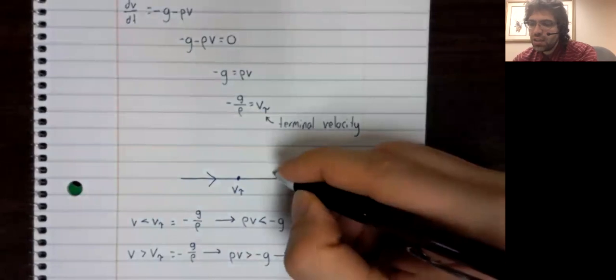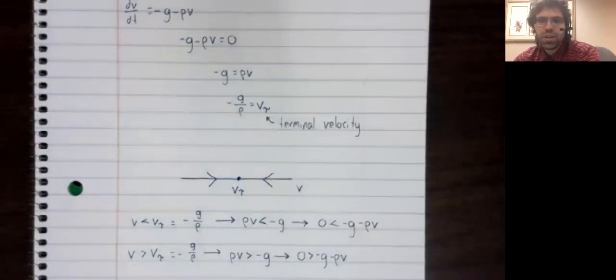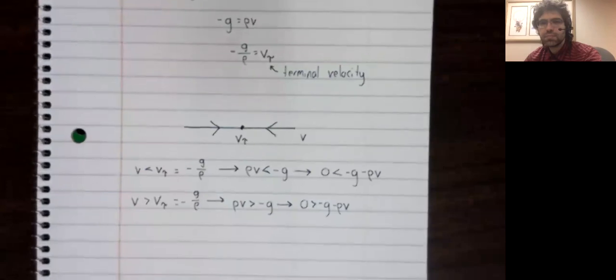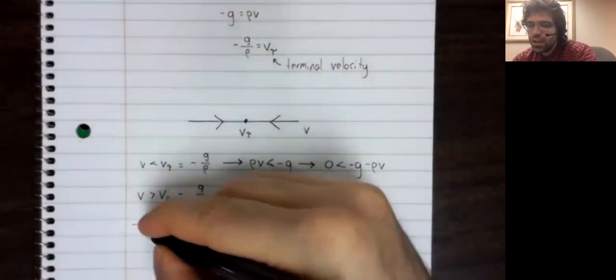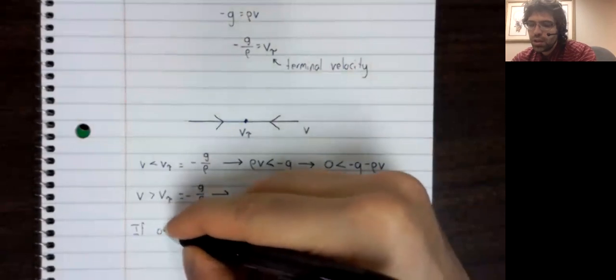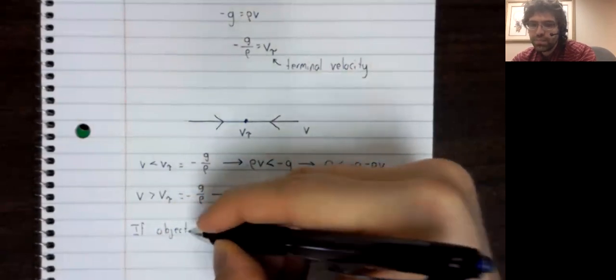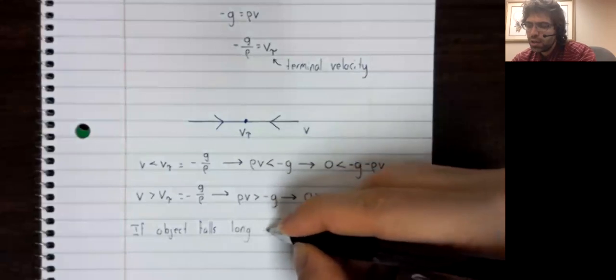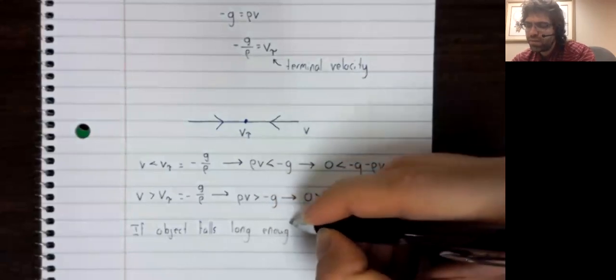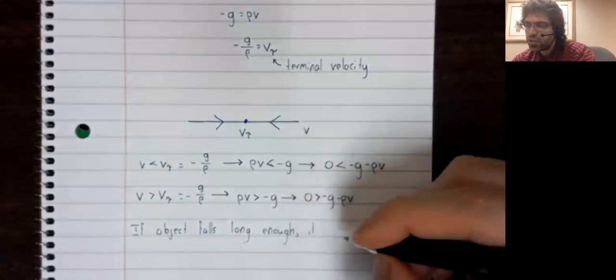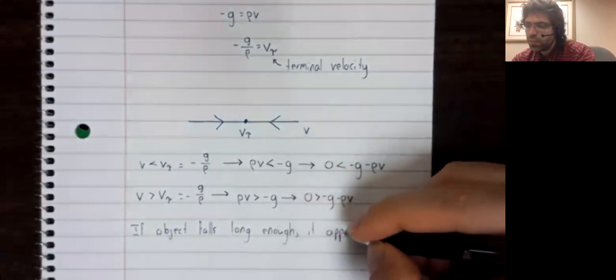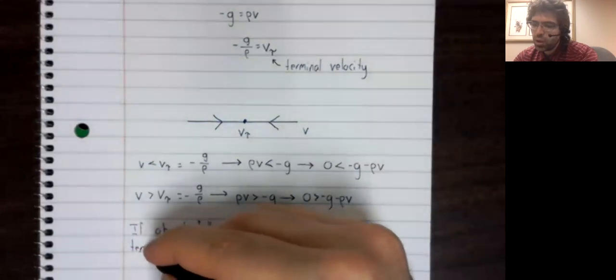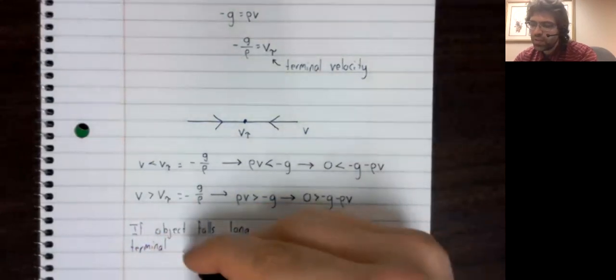That is to say, if the derivative is negative, the velocity is decreasing. And so, if an object falls long enough, it's approaching terminal velocity.